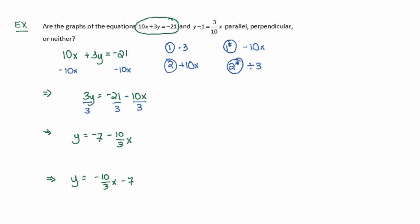All right, so that was the first equation. This equation is taken care of and solved for y. Second equation won't be so bad because all we have to do is add one. So it was y - 1 = 3/10 x. I'm going to add one to both sides to isolate y.